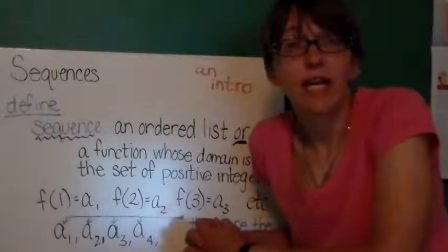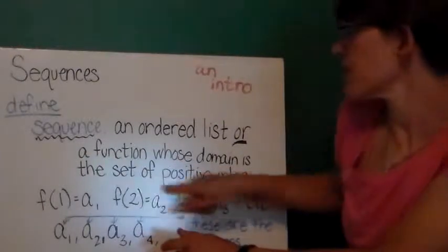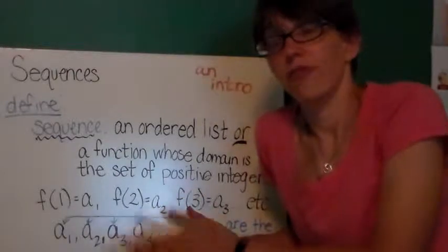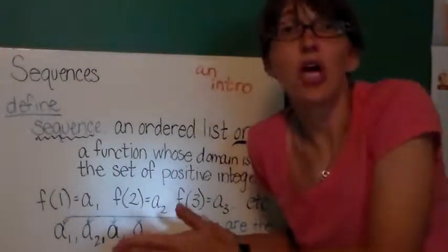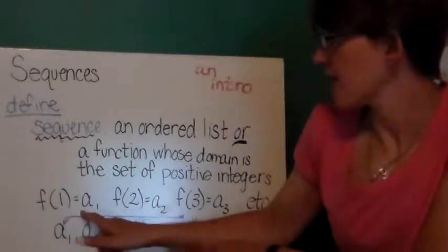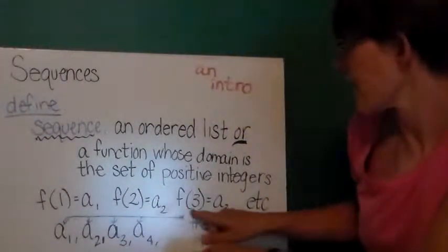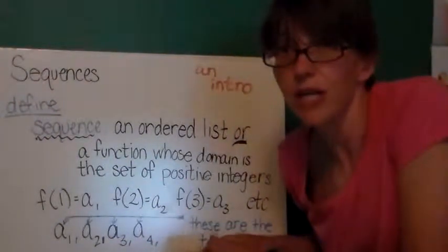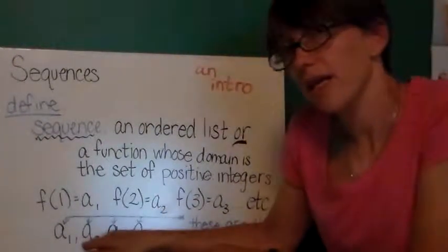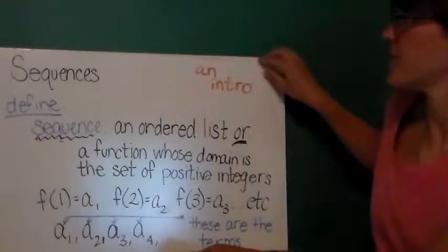In mathematics, we can define a sequence as a function whose domain is the set of positive integers. So we think about it if there's a first number in the list, a second number, a third number, a fourth number, and so on. So f of one is a sub one, f of two is a sub two, the second number in the list, f of three is a sub three, the third number in the list, etc. These things, a sub one, a sub two, a sub three, and a sub four, they're called the terms of the sequence.